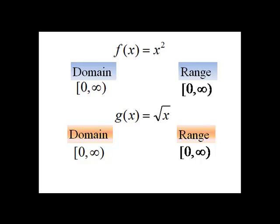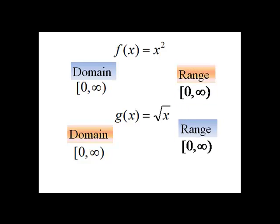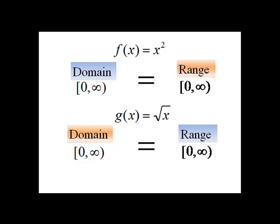And so now, here's what we have. So our restricted domain for f is from 0 to infinity. So this is a requirement in order for these two functions to be inverses of each other. And if we check, the domain of f equals the range of g, and the domain of g equals the range of f, so we in fact have inverse functions.